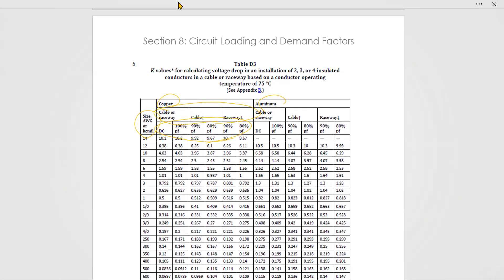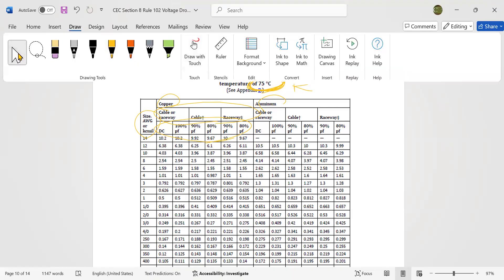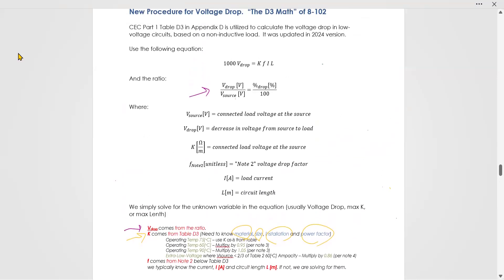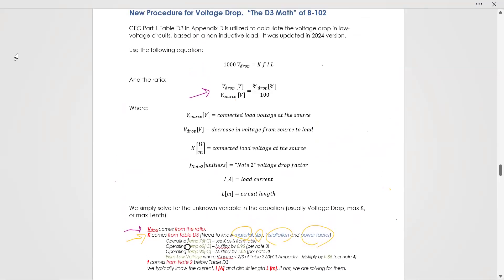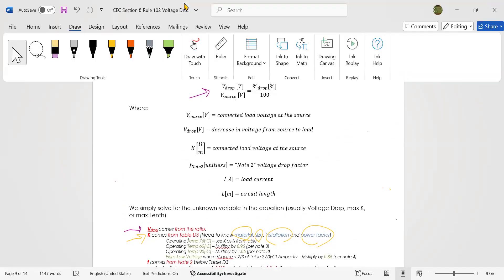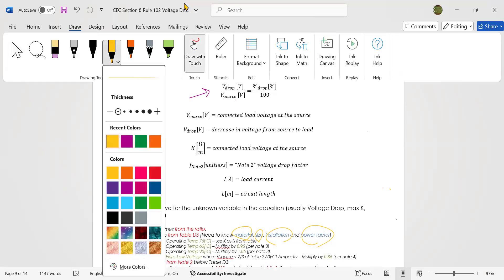We also have to notice that table D3 gives you the K value for 75 degrees. So that's why we have a couple other factors that just have to do with temperature. So the K value comes from table D3.